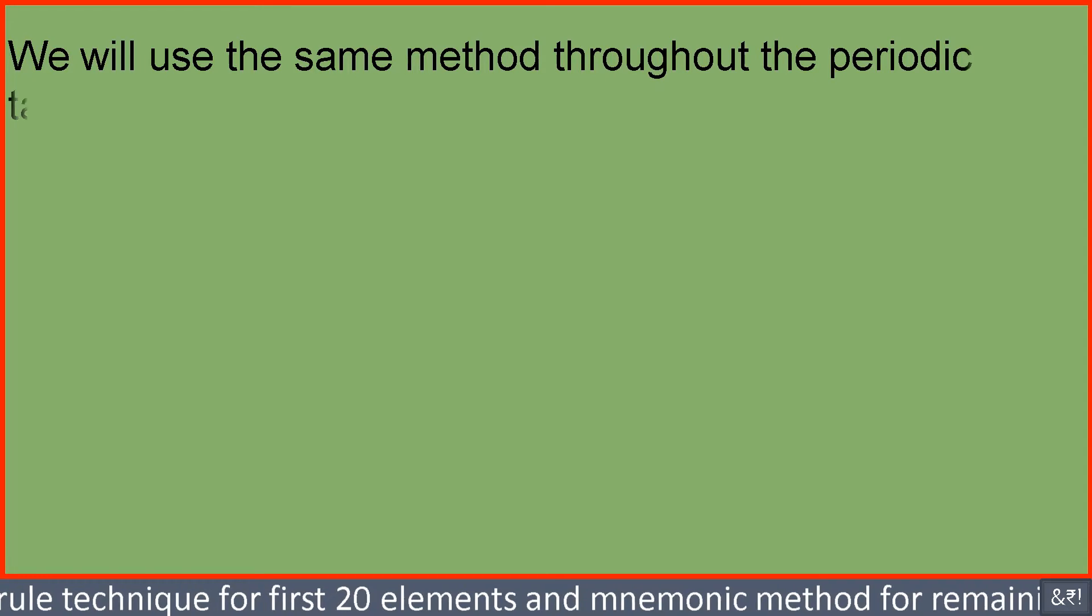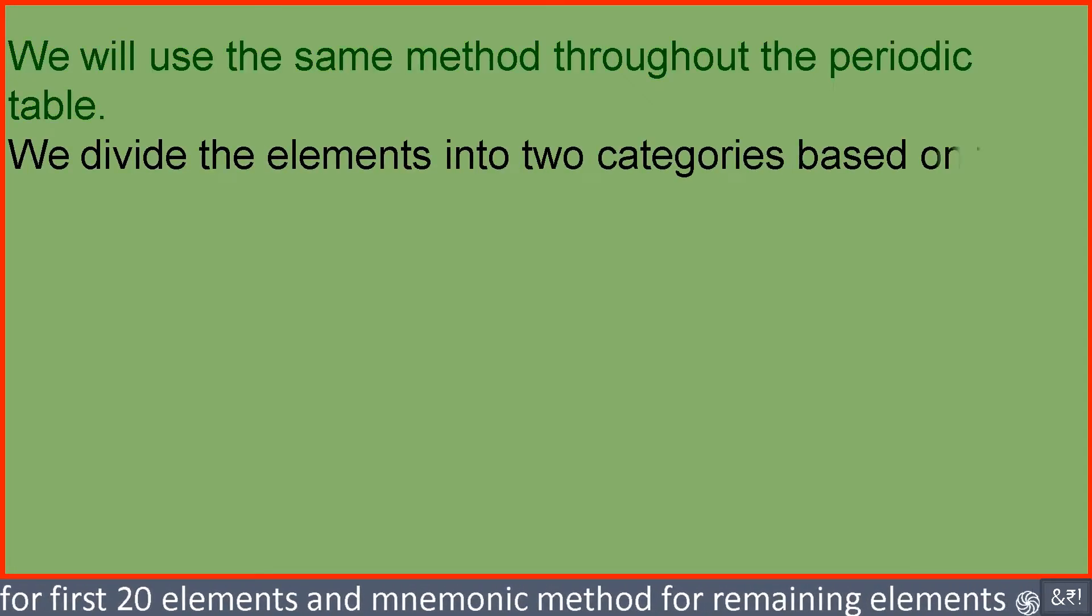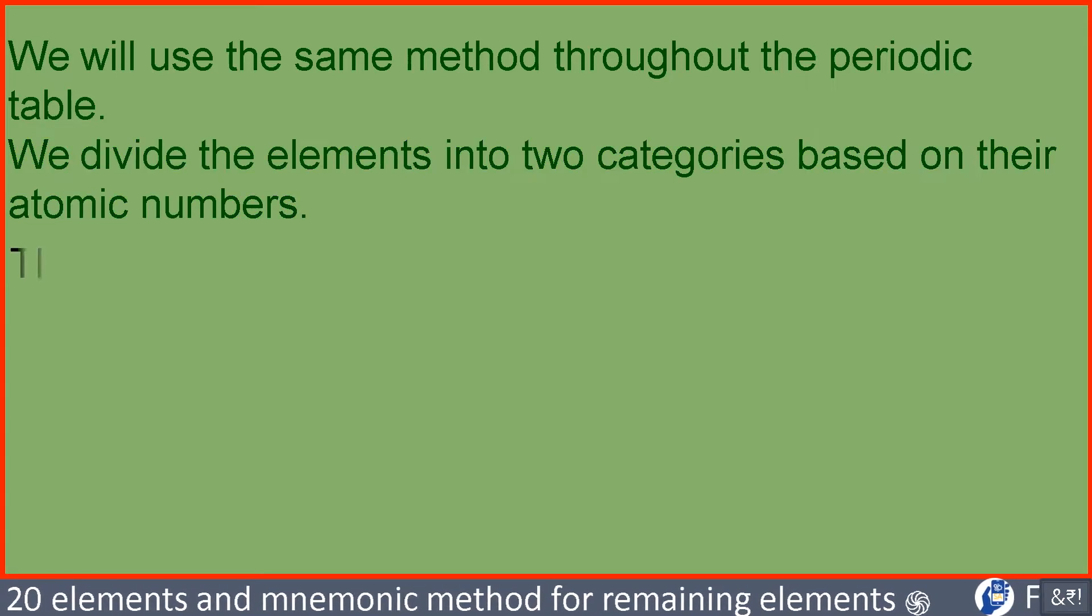We will use the same method throughout the periodic table. We divide the elements into two categories based on their atomic numbers. The rule is very simple.